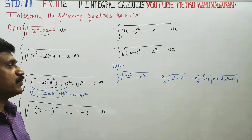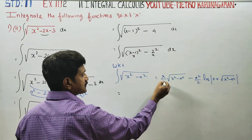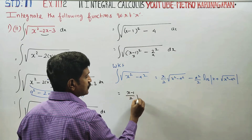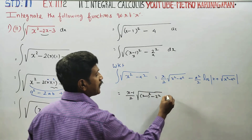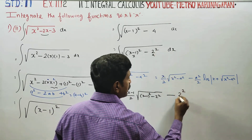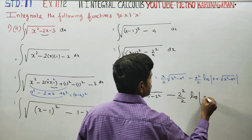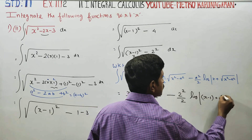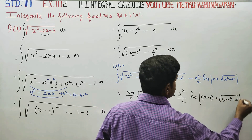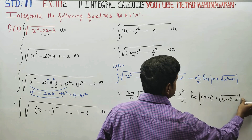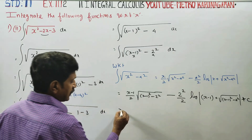Using this formula, substituting x with x minus 1 and a with 2, the answer will be: x minus 1 by 2 times square root of x minus 1 squared minus 2 squared, minus 2 squared by 2 times logarithm of x minus 1 plus square root of x minus 1 squared minus 2 squared, plus c — the integration constant.